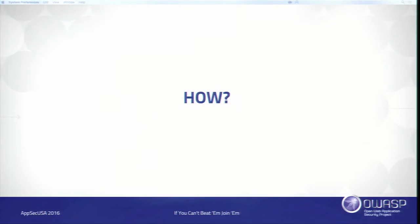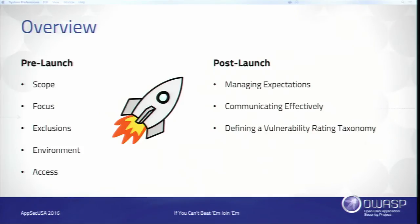So how do you go about doing this? We'll start with pre-launch aspects — Grant's territory. He'll talk about things you need to consider when setting up a program: where do you want researchers to test, what's the scope, what vulnerability types or target types do you want them to focus on. You'll also need to specify exclusions — very important to say upfront what you don't want to see. Setting up the environment and access is also critical so there are minimal roadblocks discouraging researchers from testing.